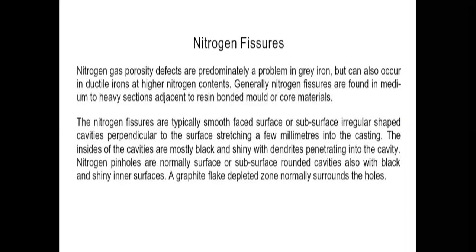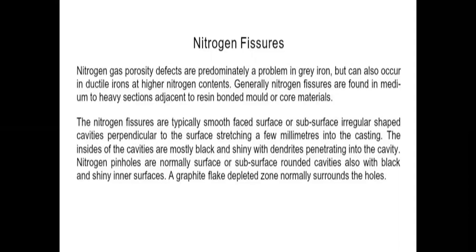Nitrogen gas porosity defects are predominantly a problem in gray iron but can also occur in ductile iron at higher nitrogen content. Generally, nitrogen fissures are found in medium to heavy sections adjacent to a resin-bonded mold or core material.